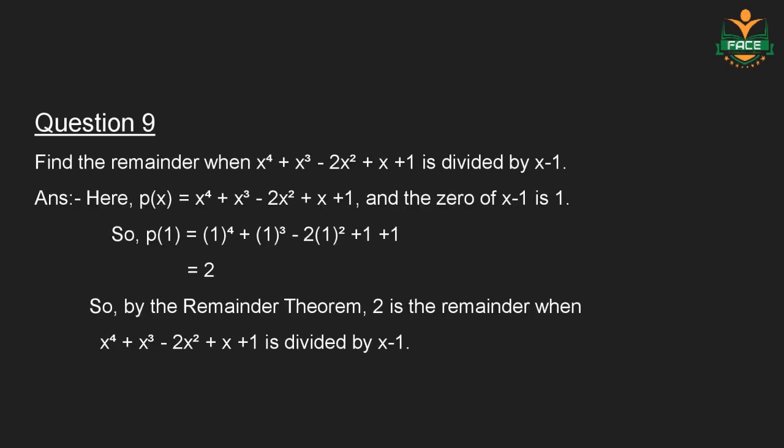Question number 9: Find the remainder when x to the 4th plus x cubed minus 2x squared plus x plus 1 is divided by x minus 1. Here, P(x) is equal to x to the 4th plus x cubed minus 2x squared plus x plus 1, and the zero of x minus 1 is 1. So P(1) is equal to 1 to the 4th plus 1 cubed minus 2 into 1 squared plus 1 plus 1, which is equal to 2. By the remainder theorem, 2 is the remainder when the polynomial is divided by x minus 1.